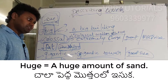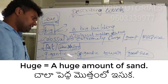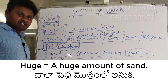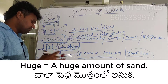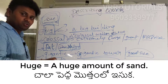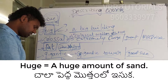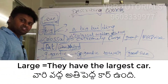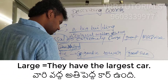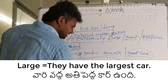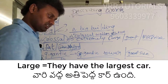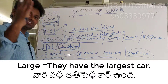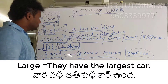Next is 'huge,' which also means very large. For example: a huge amount of sand, or a huge amount of oil. Then we have 'large' — with comparatives larger and largest. For example: they have the largest car, describing something biggest in size.